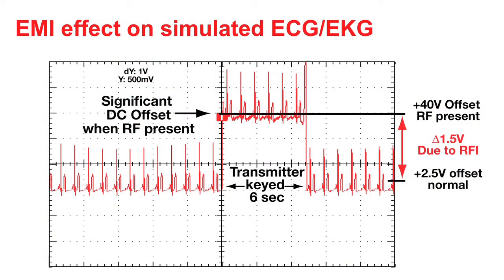In the presence of EMI, an ECG or EKG system with analog components shows a high offset while the transmitter is turned on for only a short period of time. Mitigating this offset error effect caused by or induced by the presence of EMI is a rather simple concept.